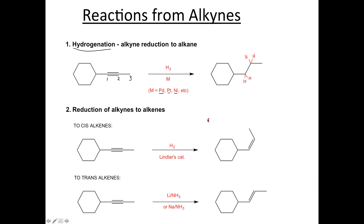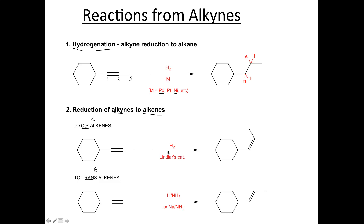The second reduction we want to talk about is going from an alkyne to an alkene. What's important in this reaction is to understand there are two types of alkenes we can make: we can make cis or Z alkenes, and we can make trans or E alkenes. The conditions to do these two reactions are different. To form a cis alkene, we're going to be using the reagent H2 and Lindlar's catalyst. Lindlar's catalyst is a mixture of usually lead, calcium carbonate, and quinoline, and that partially reduces the alkyne to our cis alkene.